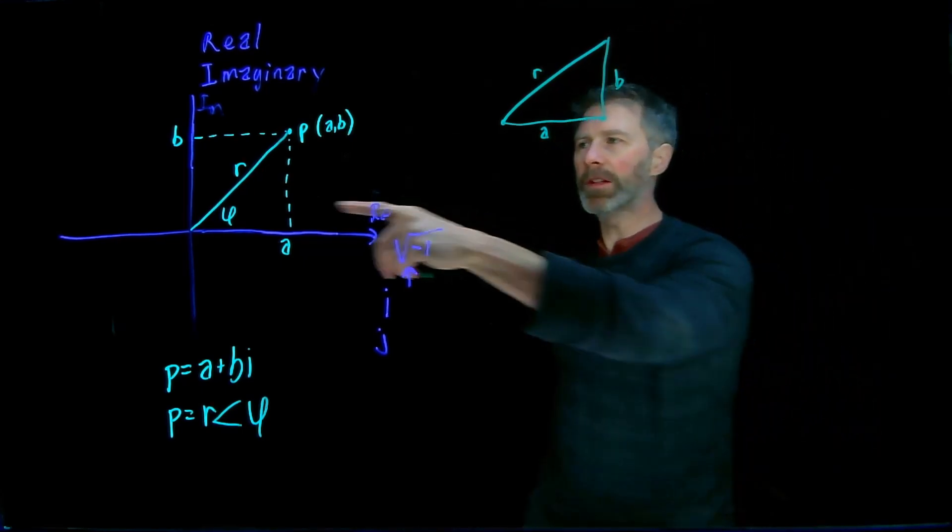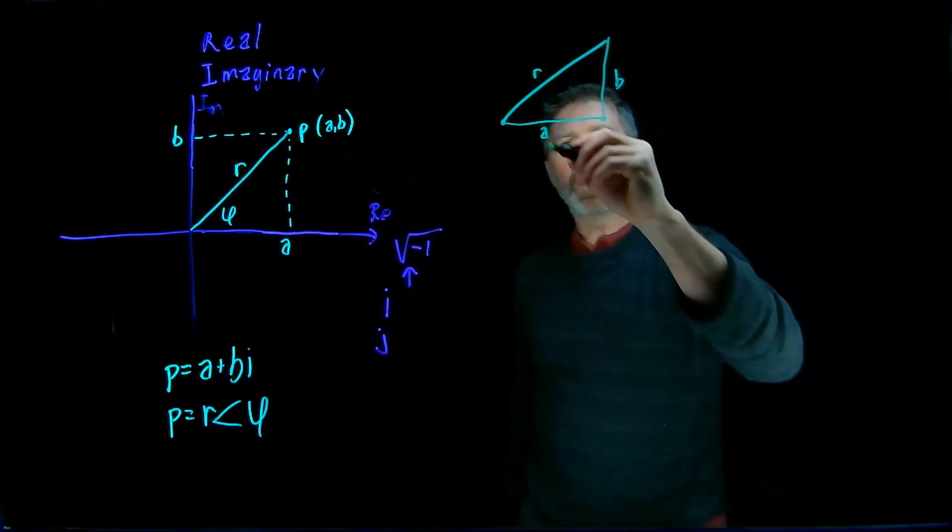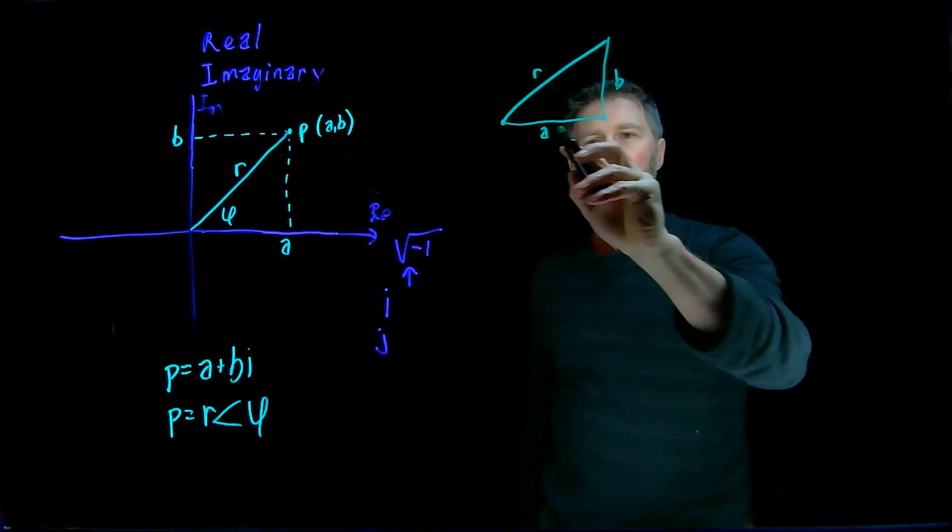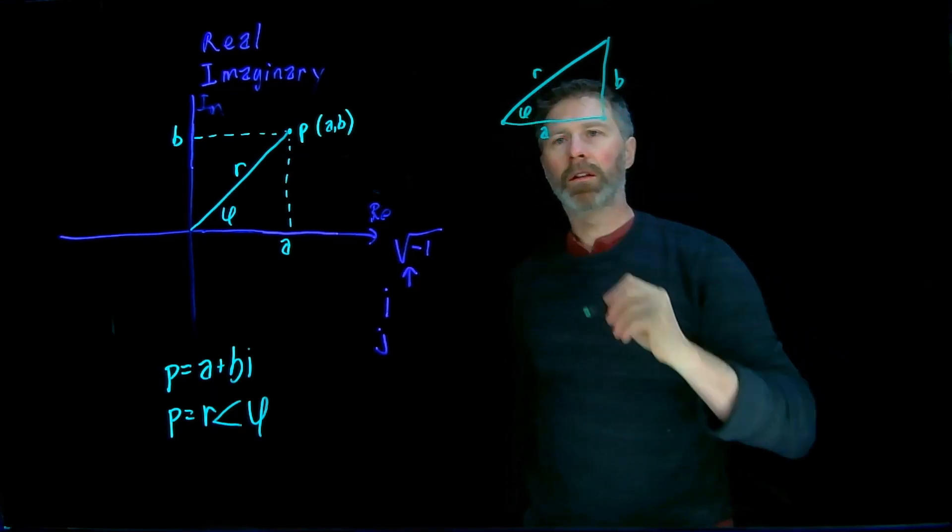I've redrawn it over here, and that's the imaginary part. And then we have the angle between the line segment and the positive real axis, and we're calling phi.